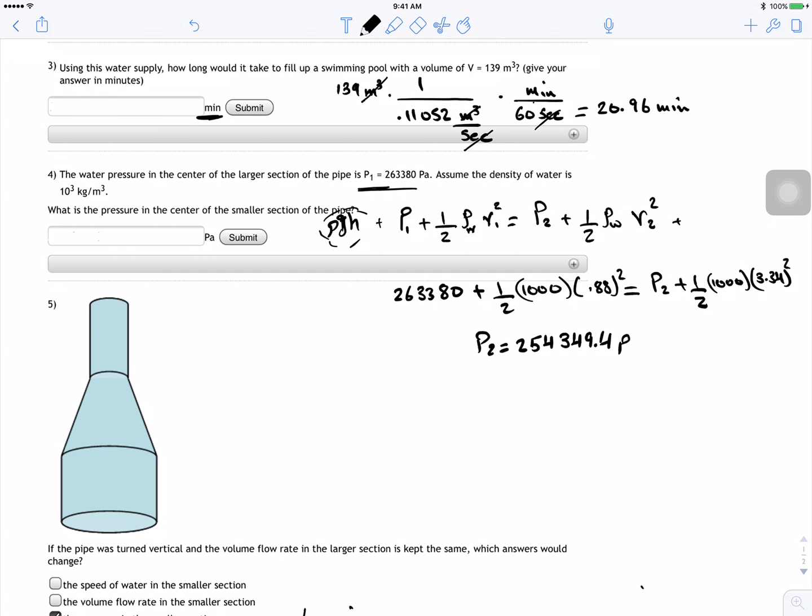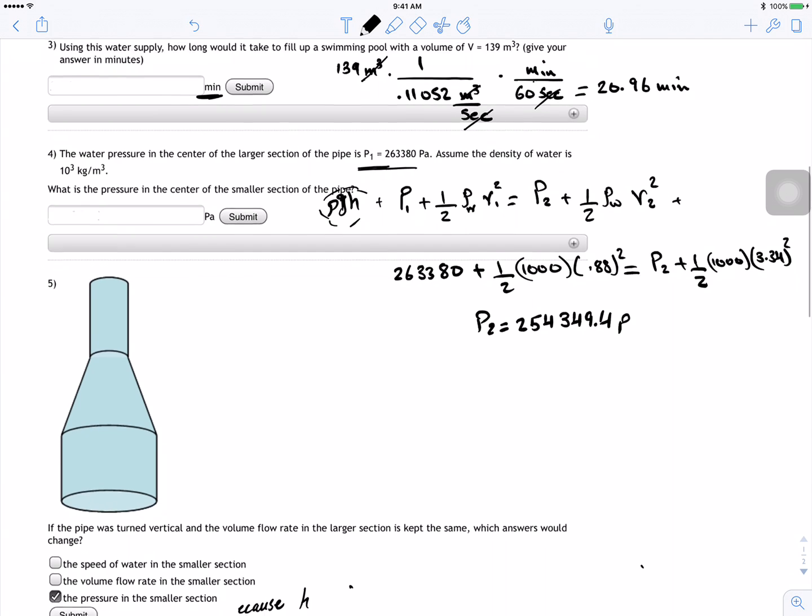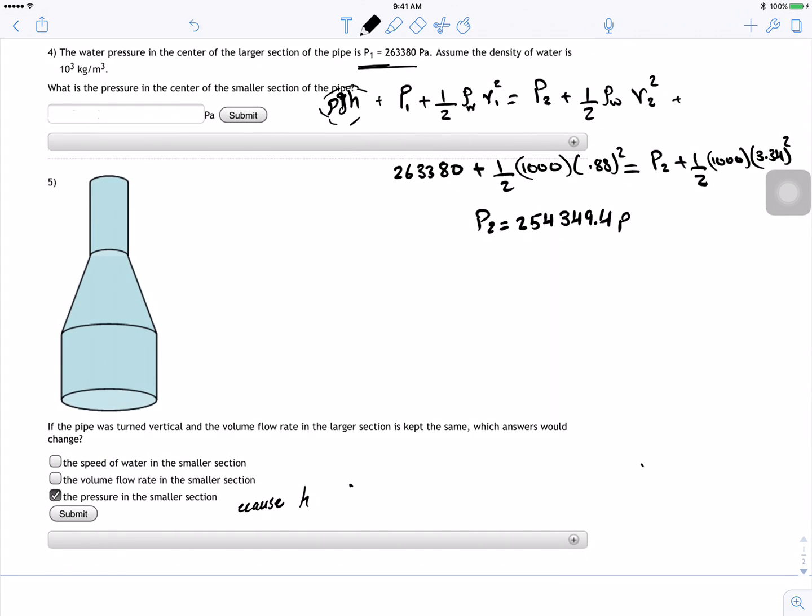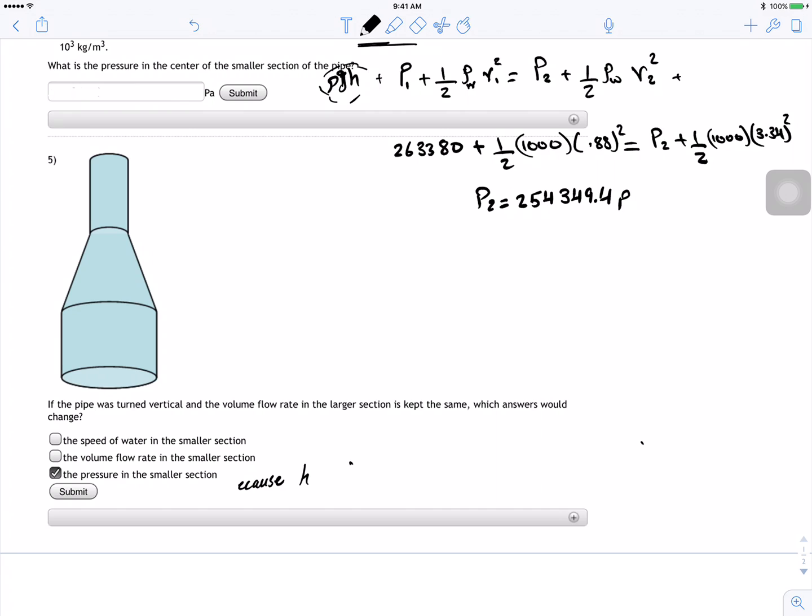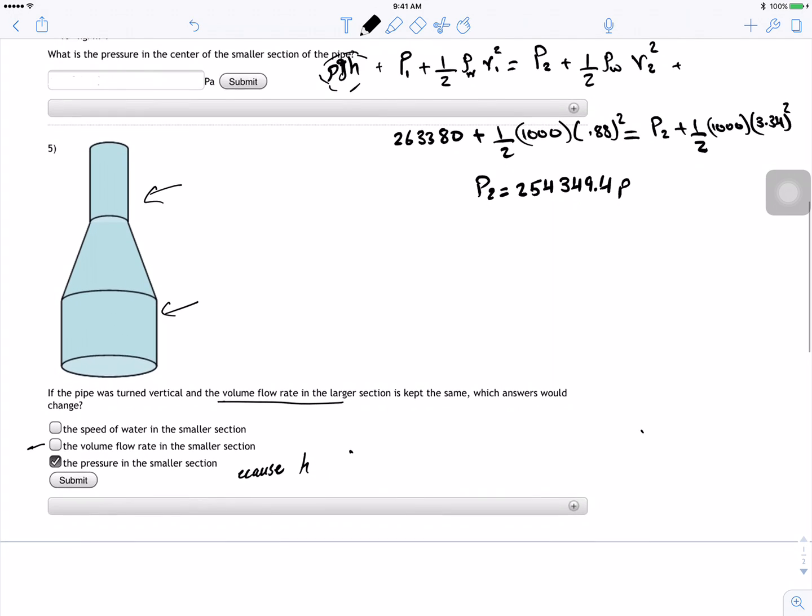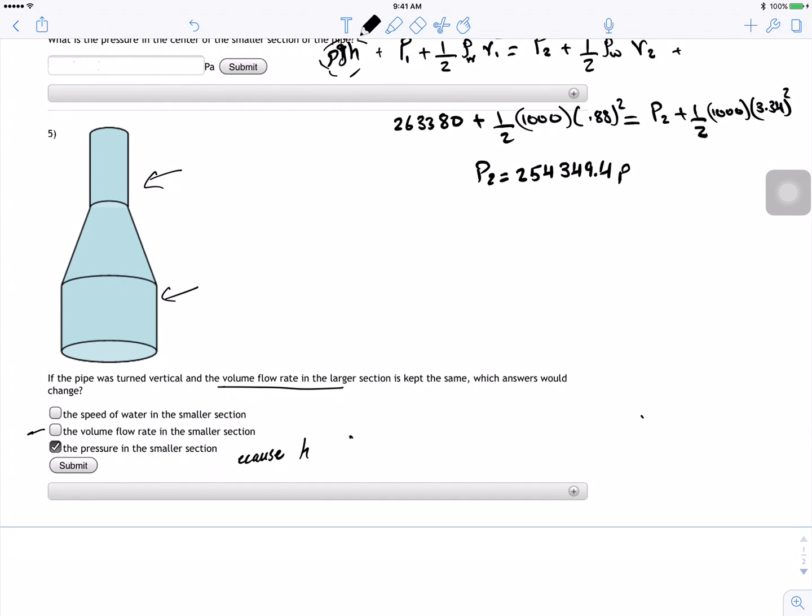Okay, and for the last question they just flipped it. They're asking what change, but the volume rate doesn't change since they said the volume rate can be the same. It's always the same for the smaller section, for the bigger section, for the small section.